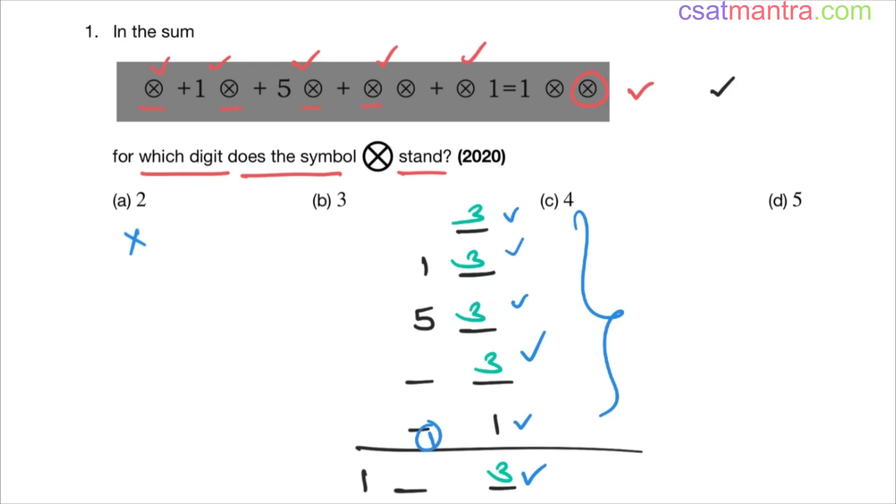So I'm substituting 4 in this case. Now sum: four 4s are 16, 16 plus 1 is 17. So we should be having 7 here, whereas we are having 4. That means this is incorrect.